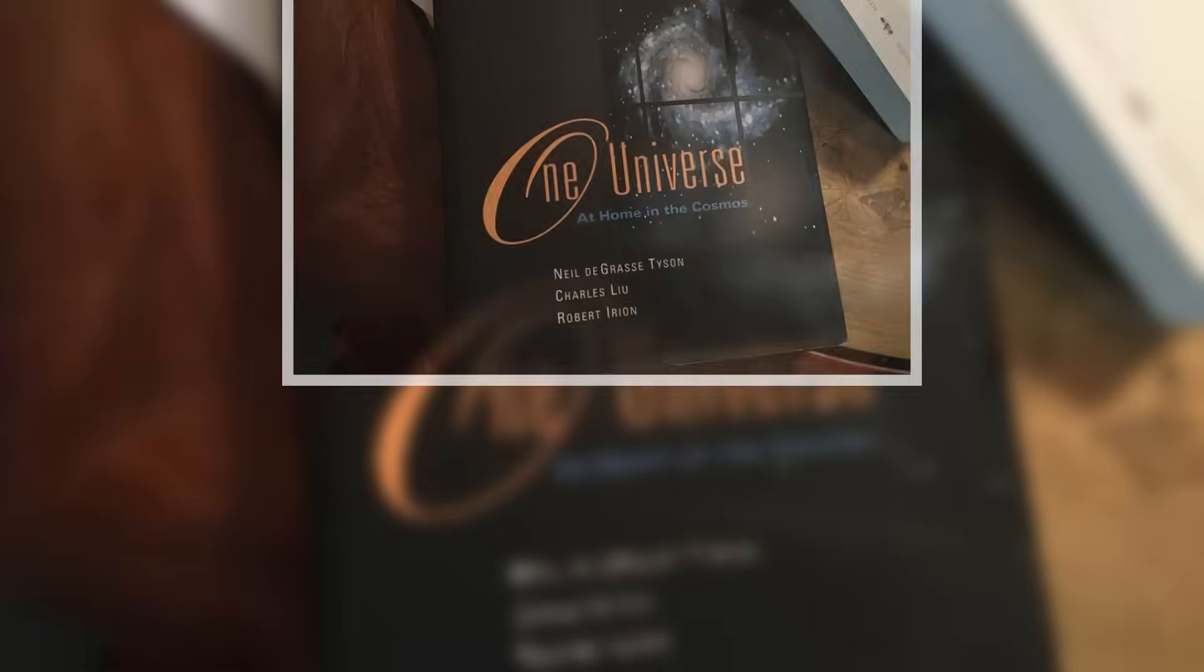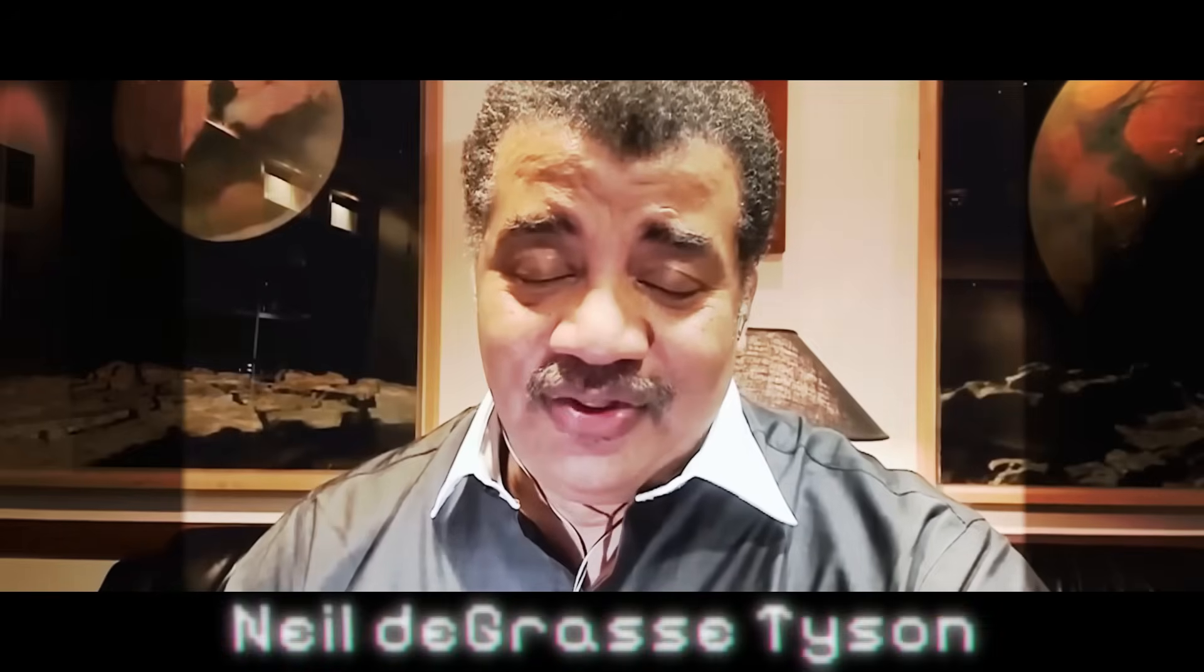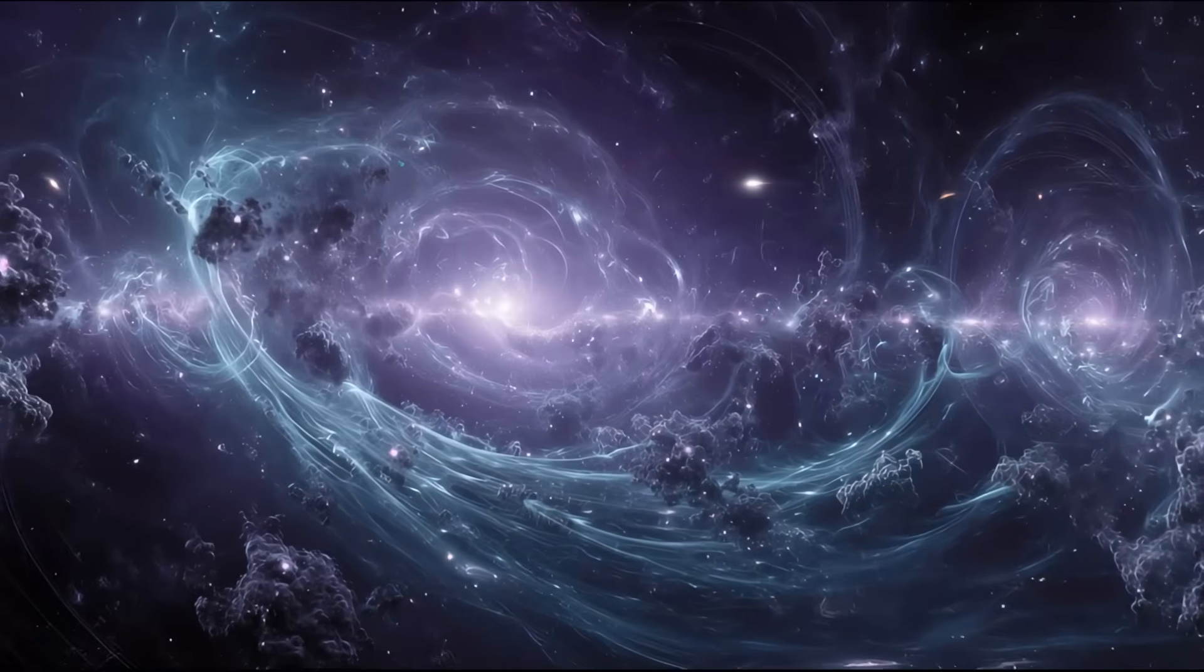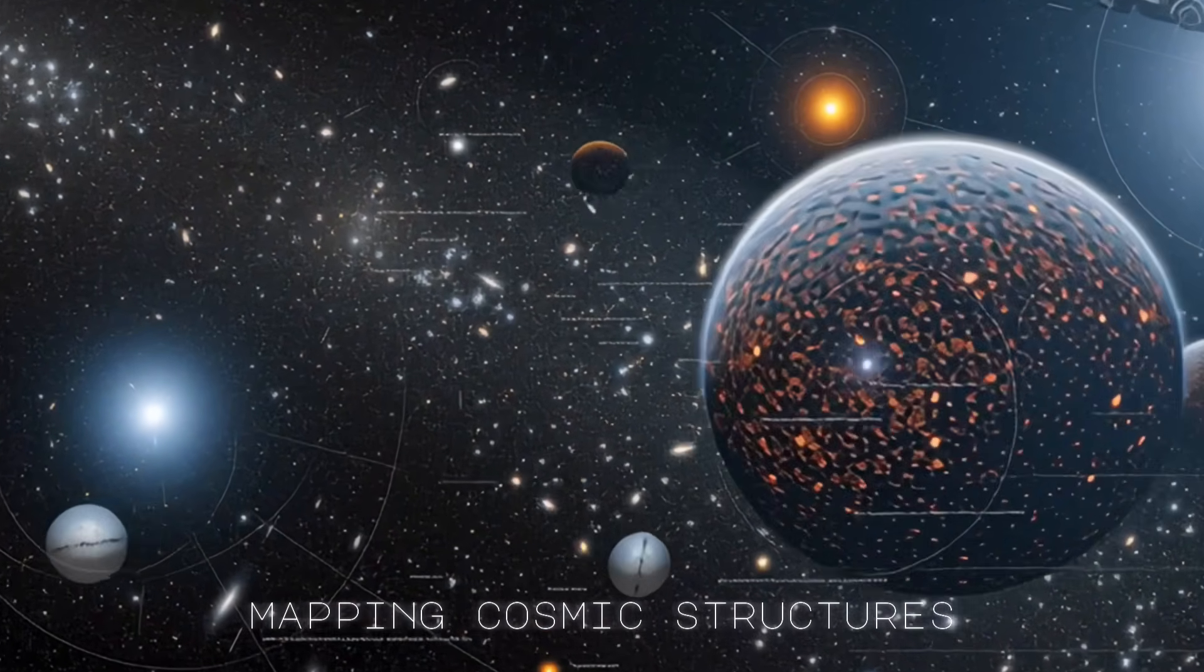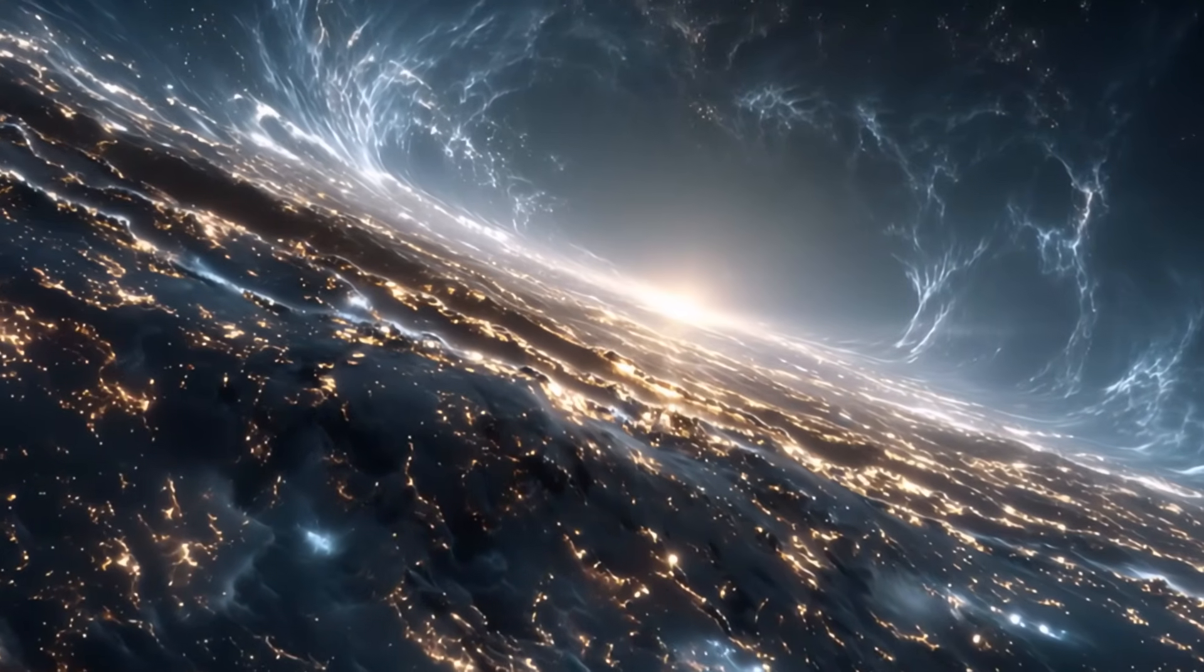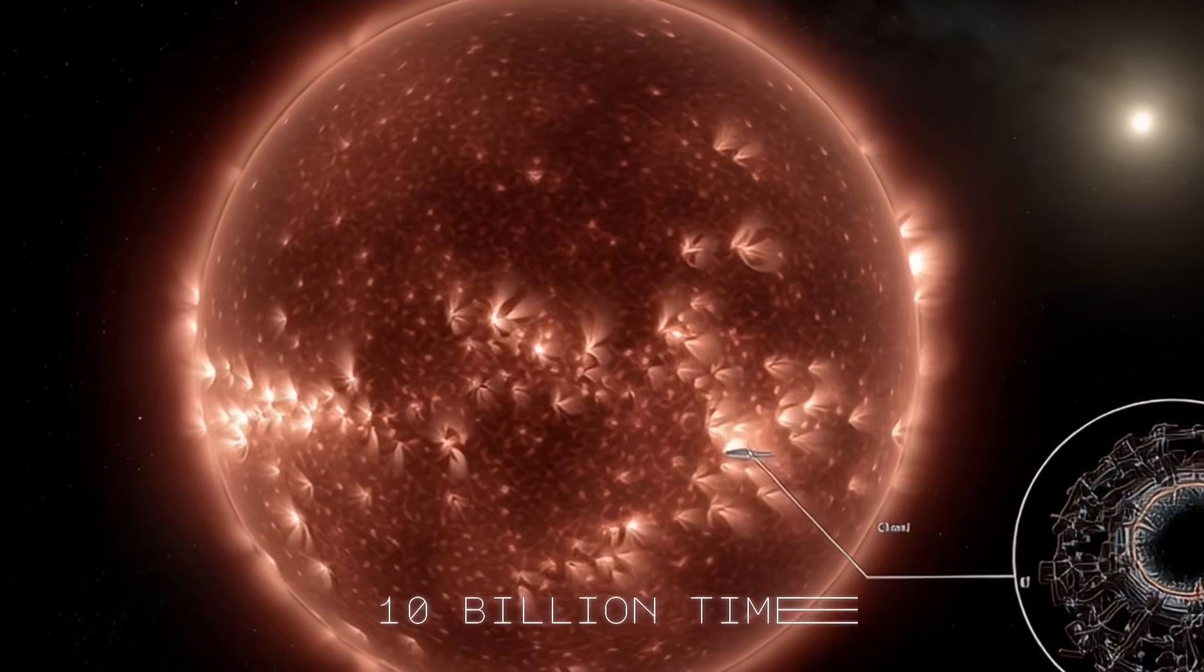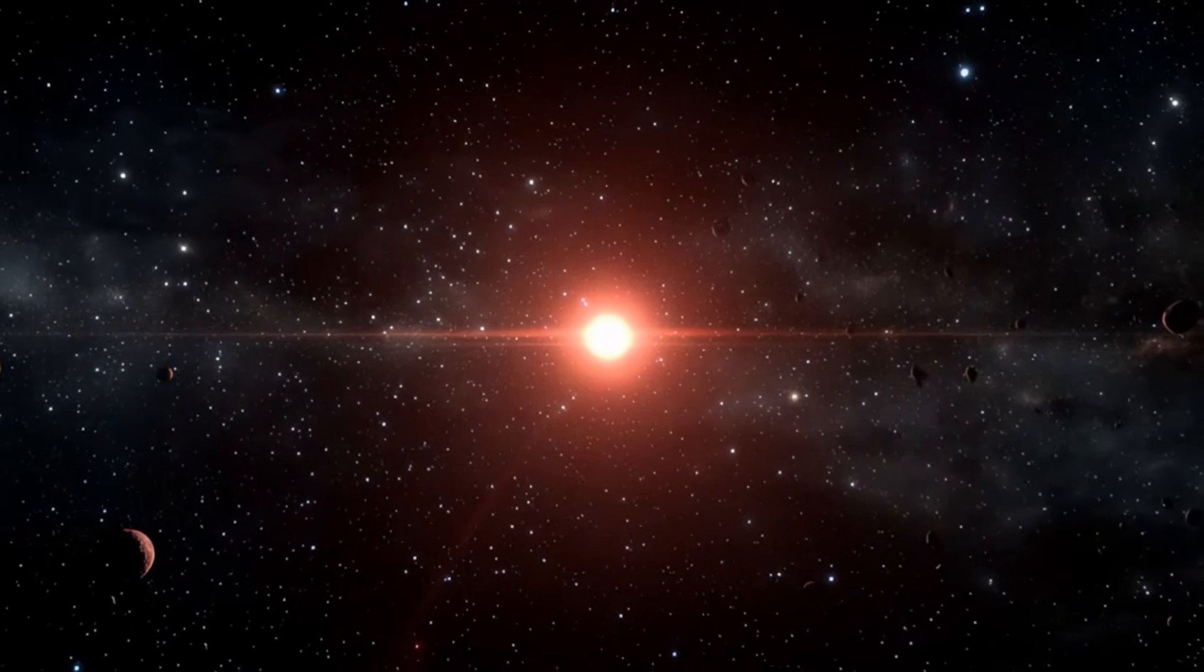Charles Liu, the astrophysicist from the City University of New York who literally wrote the book One Universe at Home in the Cosmos with Neil deGrasse Tyson, has spent decades studying colliding galaxies and the evolution of stars. Stevenson 2-18 has a volume roughly 10 billion times that of our sun, which contains 99.8% of all the mass in our entire solar system.